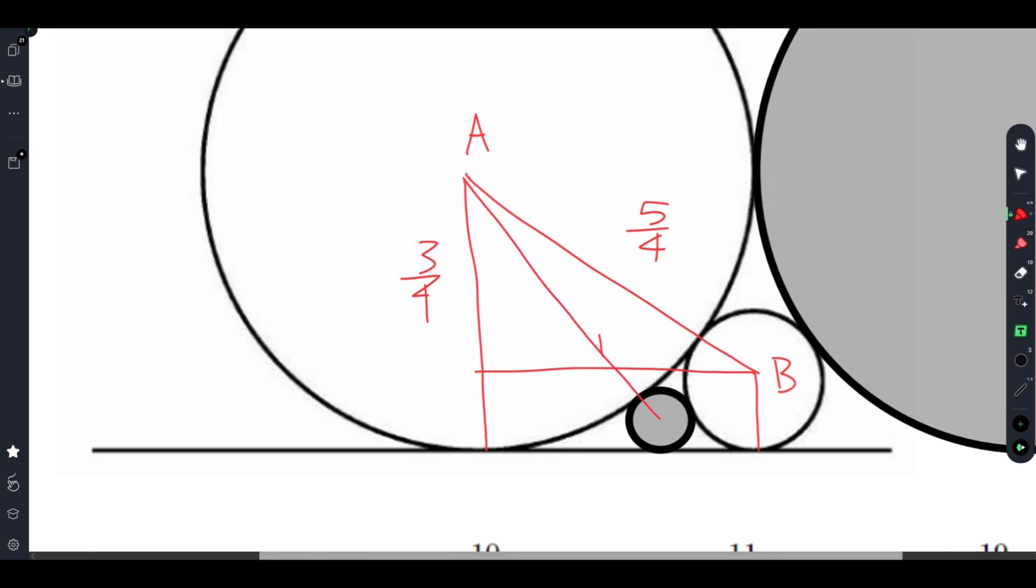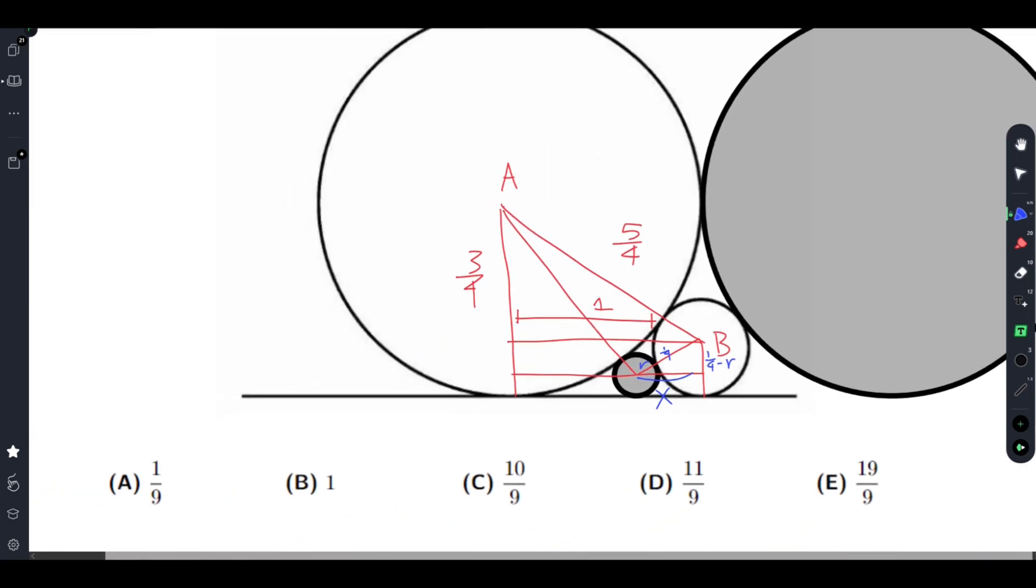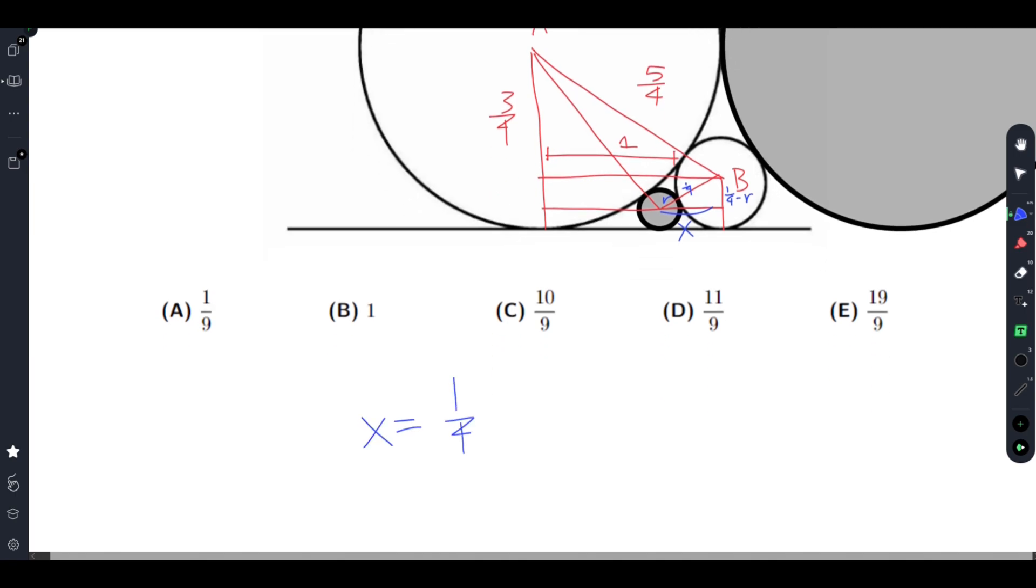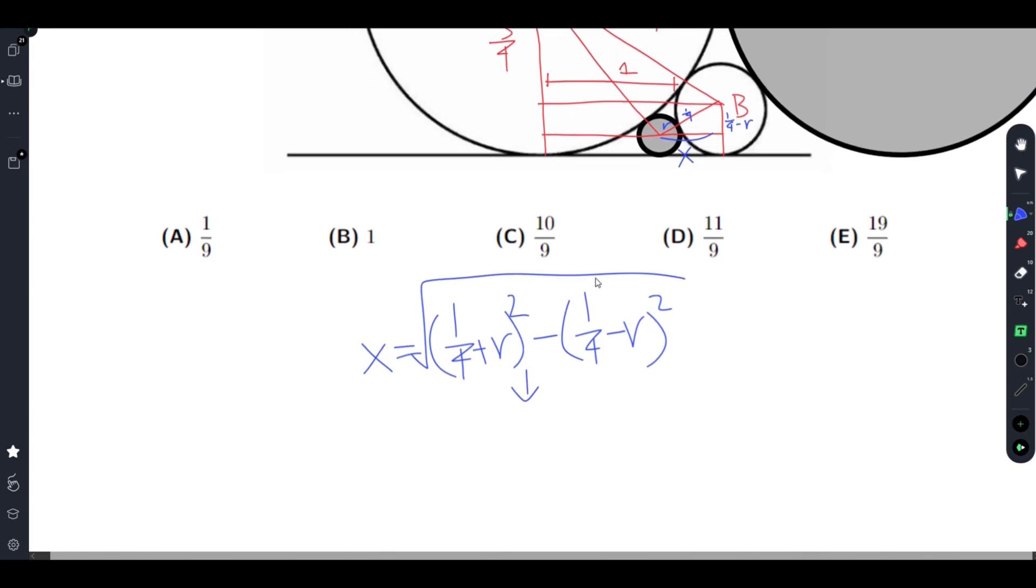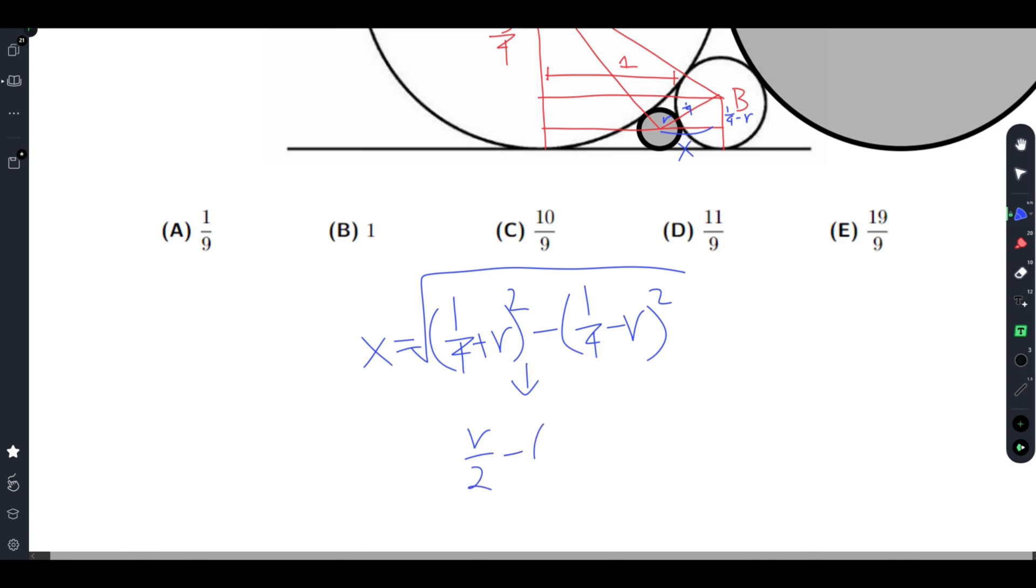Now we draw the line connecting these two. So now we have some Pythagorean theorem. So what we have is we set this value as x. This is obviously 1 fourth minus r. And this is 1. So we can do Pythagorean theorem. We get that x is equal to 1 fourth plus r squared minus 1 fourth minus r squared. And while crossing these out we get r over 2 minus negative r over 2 gets us x is equal to root r.